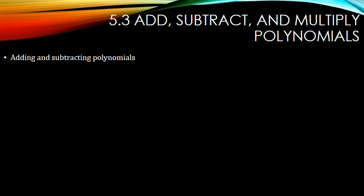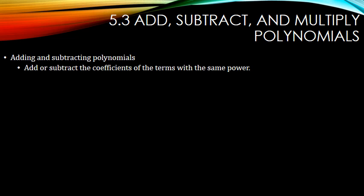So, how do you add and subtract polynomials? You add or subtract the coefficients of the terms with the same power. This is called combining like terms. So you combine the x-squares, you combine just the x's, and so on.